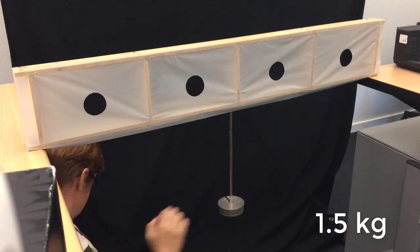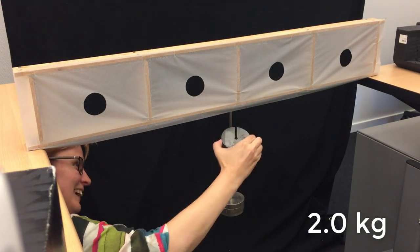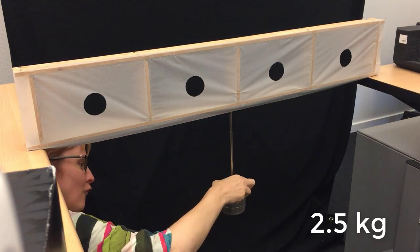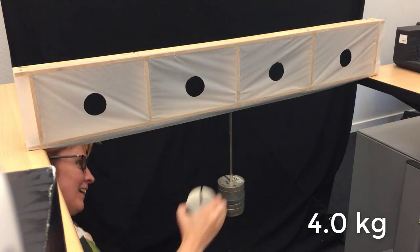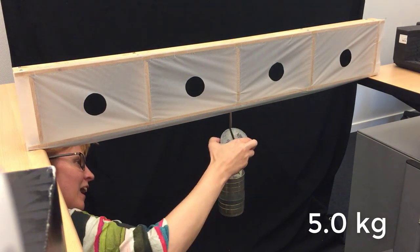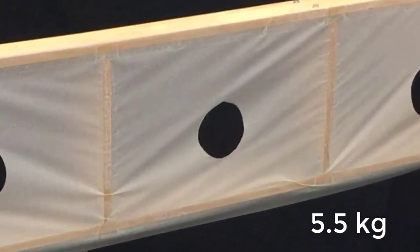Now let's try the circular cutouts. Like we saw with the squares, there appear to be diagonal lines forming in the paper as we increase the load. Let's pause for a second and observe what's happening when we get to a load of 5.5 kg. What do we see? Is there any evidence that tears are starting to form? Let's keep going.